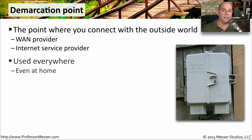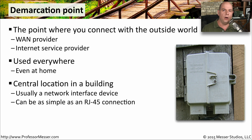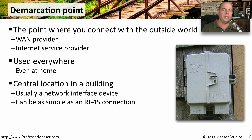You have these demarcation points not only at an office or a large organization, but you also have them at home. There has to be a determination of where your cable company or telephone company connects to your home. If it's in a building, it's usually in a central point. All the demarcations may be coming into a single room, and then you're feeding off to your local networks from that single room. Sometimes it's a simple RJ45 jack on the wall — a simple demarcation point that separates the wide area network on the outside from the WAN connectivity on the inside.